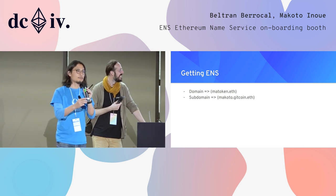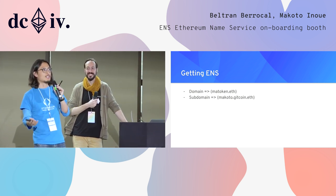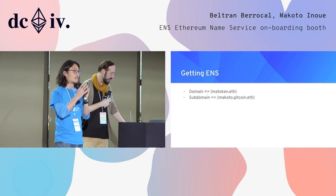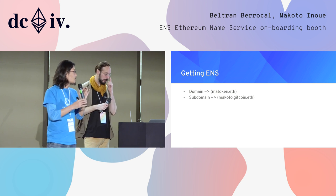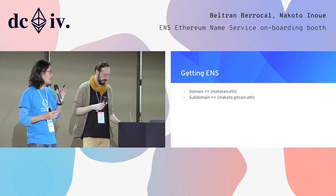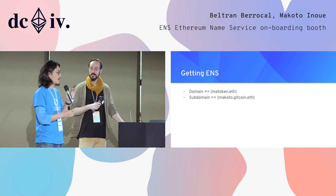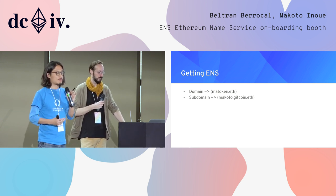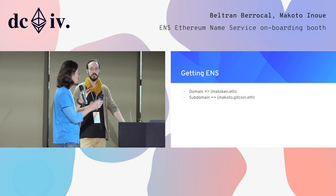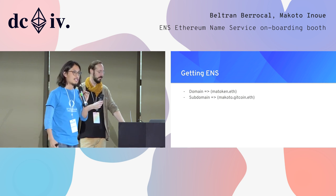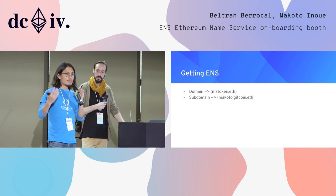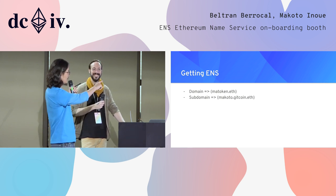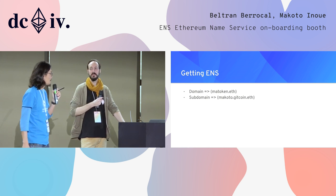ENS is like DNS. You have a DNS domain, we also have an ENS domain, and we have a notion of domain and subdomain. It kind of maps into the naming scheme of DNS as well. For example, this domain, matokun.eth — if you want to send a bit of ETH, that's the address: matokun.eth.